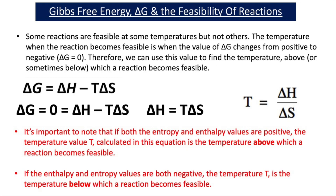Some reactions are feasible at some temperatures but not others. The temperature when a reaction becomes feasible is when the value of delta G changes from positive to negative — in other words, when delta G is equal to zero. Therefore, we can use this value to find the temperature above or sometimes below which a reaction becomes feasible.